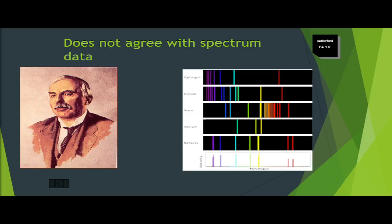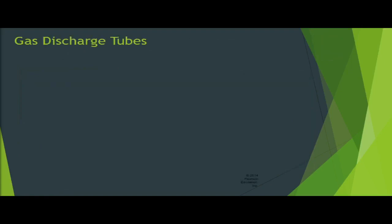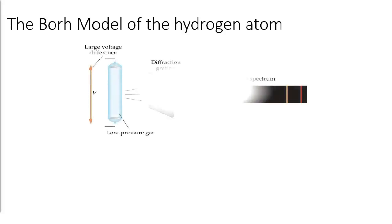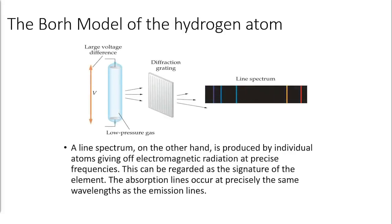During the 1900s there is a device known as a gas discharge tube. It is used to study the light given off by atoms when a high voltage is applied to the ends of the glass discharge tube which contains a gas at low pressure. The atoms in the gas become excited and emit electromagnetic radiation. Passing the radiation through a diffraction grating separates it into its various wavelengths. The result is a series of brightly colored lines. This type of spectrum emitted by atoms with bright lines at specific frequencies (colors) is referred to as a line spectrum. A line spectrum on the other hand is produced by individual atoms giving off electromagnetic radiation at precise frequencies. This can be regarded as the signature of the element. The absorption lines occur at precisely the same wavelengths as the emission lines.